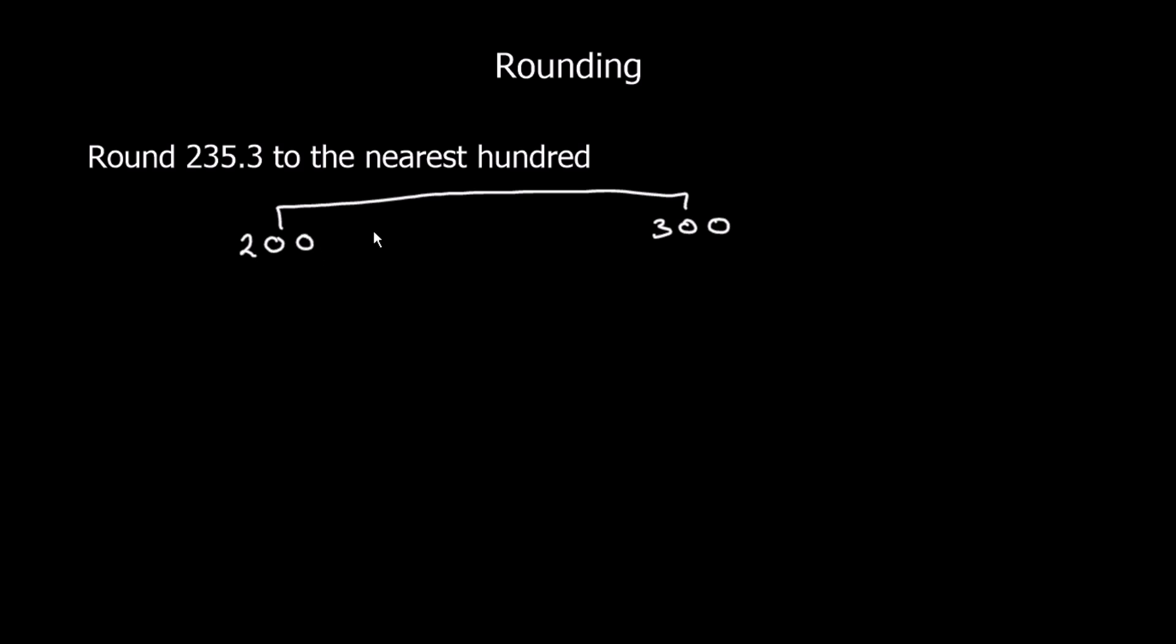So in order to round it, what we do is we look at the middle, so the midpoint between 200 and 300, which is 250. And we're saying which one's it closest to? So if it's below 250, it's closest to 200. If it's 250 or up, it's closer to 300.